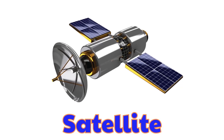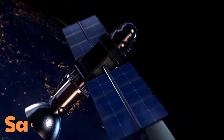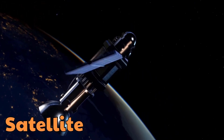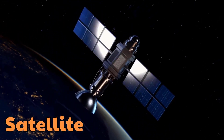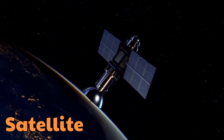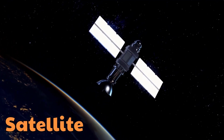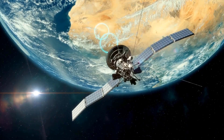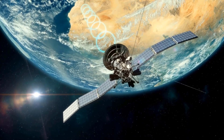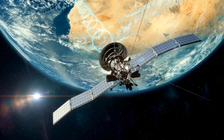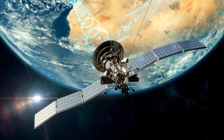Satellite. This is a satellite. A satellite is any object that orbits a larger body. It can be natural, like the moon orbiting the Earth, or artificial, made by humans to observe Earth, provide navigation, or study the universe.